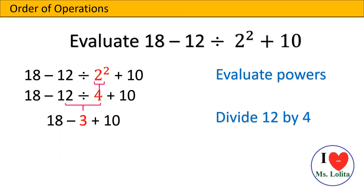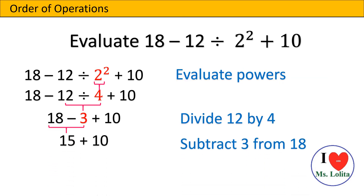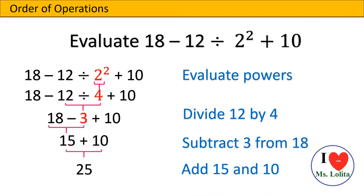After the power, there is no multiplication but there is division, so we're going to divide 12 by 4. 12 divided by 4 will give us 3. The operations left are addition and subtraction, so we're going to move from left to right. We're going to subtract 3 from 18 — 18 minus 3 will give us 15. Then we add 15 and 10, which gives us 25. The answer for 18 minus 12 divided by 2 squared plus 10 is 25.